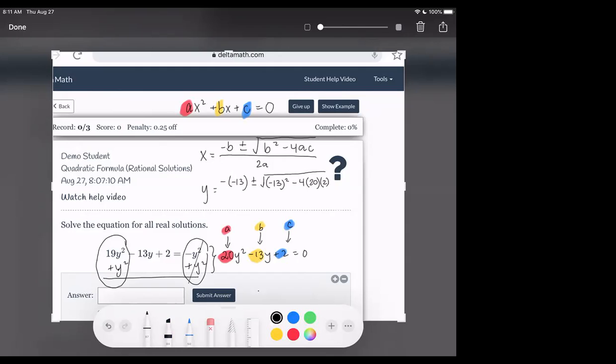And then put this all over 2 and A, which was 20. Okay, do you guys have any questions up till here? Just putting it in standard form and plugging it into our equation.